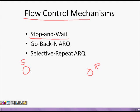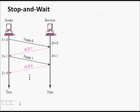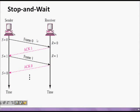In stop and wait, the sender sends some data, then the receiver receives it, processes it, and sends an acknowledgement saying you can send more data. So in the stop and wait protocol, there is a sender and a receiver, and this is the time axis where time is increasing. I send one frame then I need to wait for an acknowledgement.